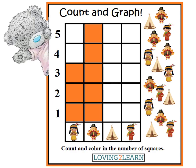We go to our next area and here is a teepee. Let's take a look — how many teepees do we count? Count with us: one, two, three, four. So we go to our graph and we color four squares in: one, two, three, four. See how two of the four lines up, and the five, because we had five turkeys and three Native American girls.